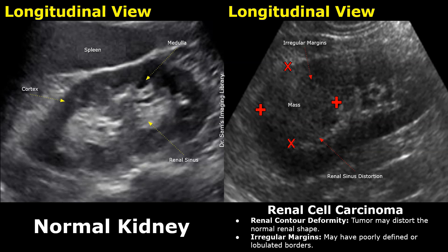The concerning features which indicate a malignant mass are renal contour deformity, irregular margins of the mass, and significant internal vascularity seen on color Doppler. This mass has deformed the renal sinus — the renal sinus is disrupted. It even protrudes outwards at this point.